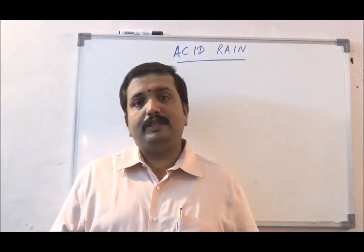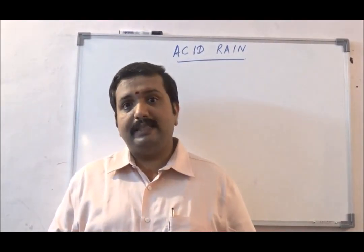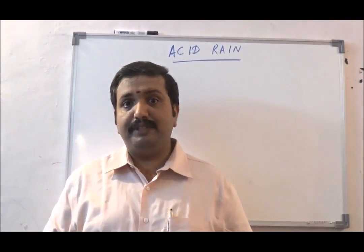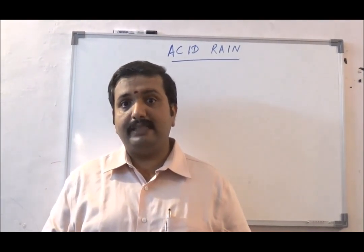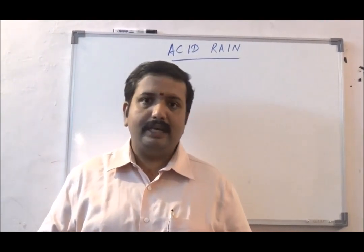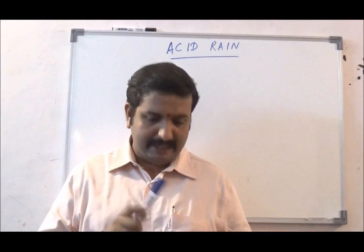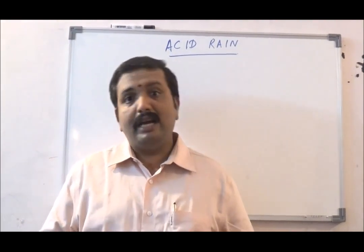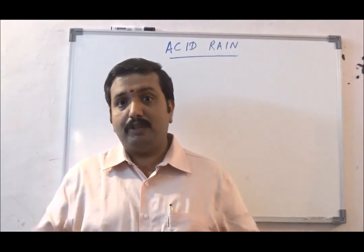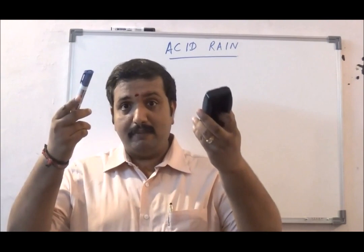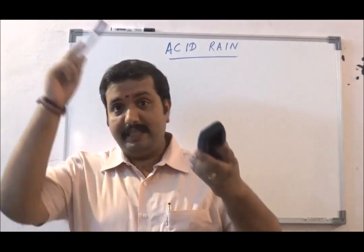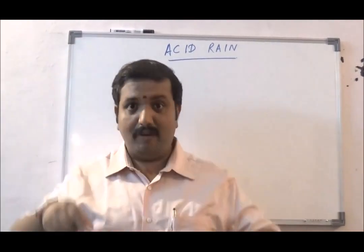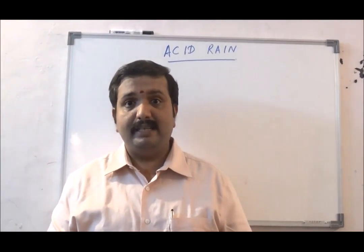In today's class we are going to see about acid rain. Acid rain is generally caused by the emission of nitrogen dioxides and sulphur dioxides from industries, from automobiles, and from other sources which go up into the atmosphere, condense there, mix with the water droplets, and fall down as acid rain.